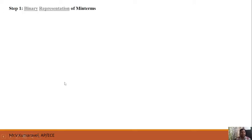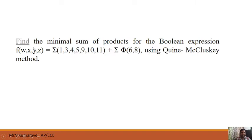In QM Method, Step 1 is binary representation of minterms. What it means by binary representation of minterms — we have all the minterms: 1, 3, 4, 5, 9, 10, 11. We have to consider all these minterms and represent them in terms of their binary equivalent.